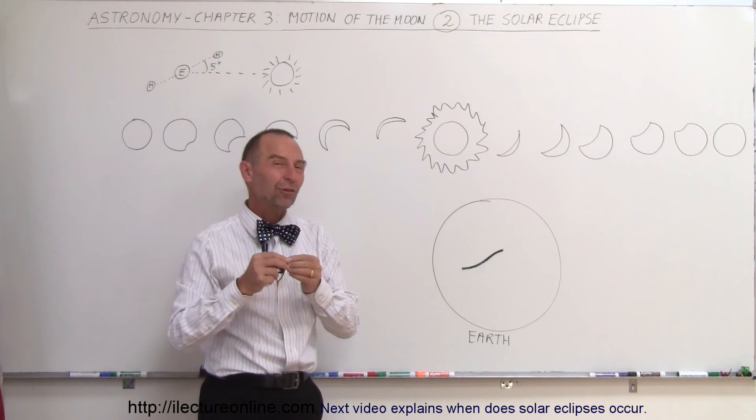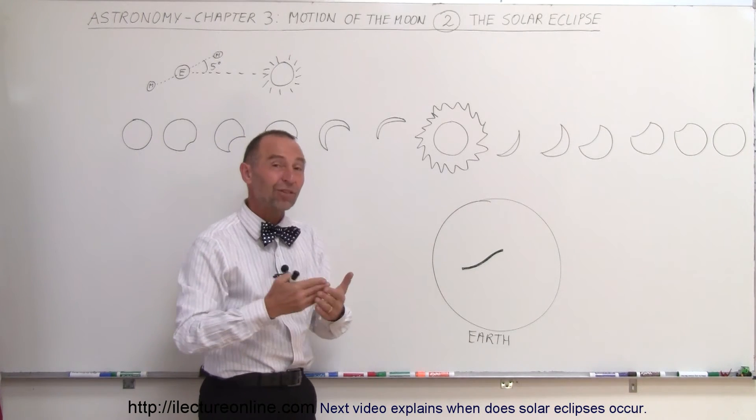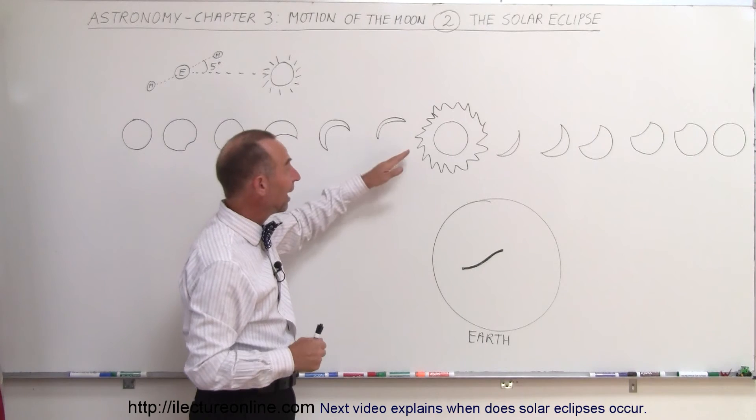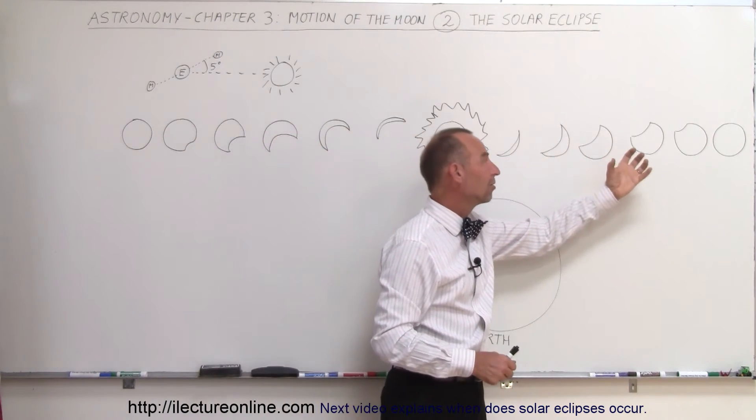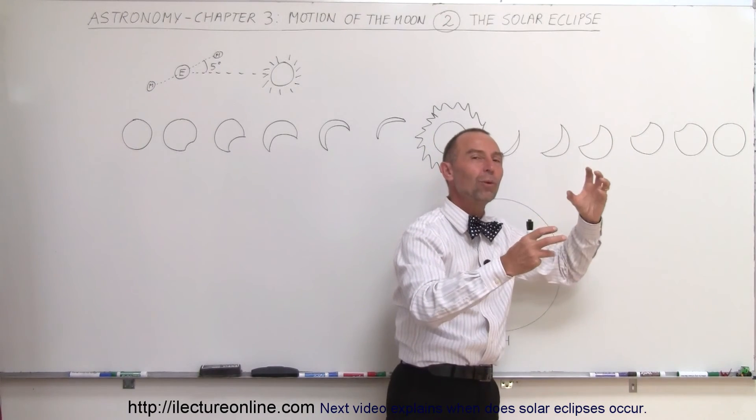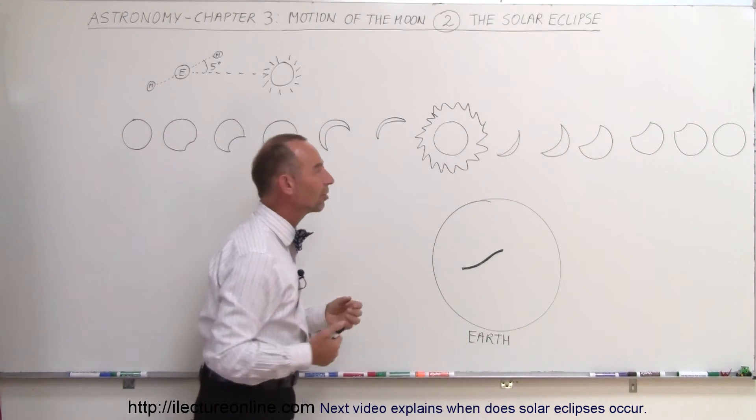The solar eclipse typically only lasts for a few minutes. The longest is a little over seven minutes that we've experienced. And then the disk of the Sun begins to appear again and becomes bigger and bigger as the disk of the Moon then slowly moves away from in front of the Sun and the Sun can shine again.